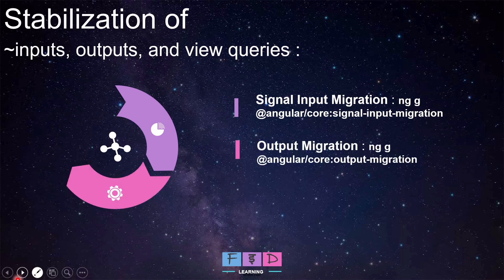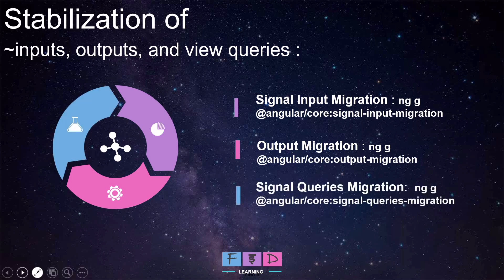The next tool is Output Migration, which updates components to the new function-based output API, run with the command: ng generate @angular/core:output-migration. The last tool is Signal Queries Migration, which replaces queries like viewChild and contentChild with signal-based equivalents, using the command: ng generate @angular/core:signal-queries-migration.